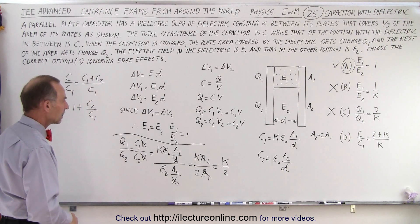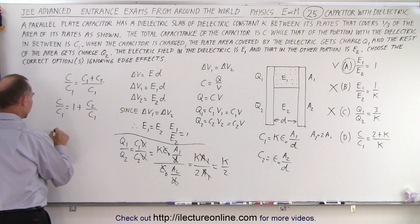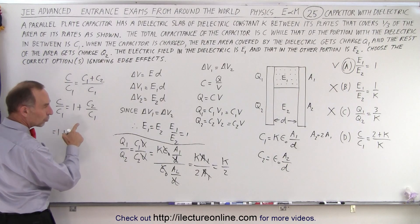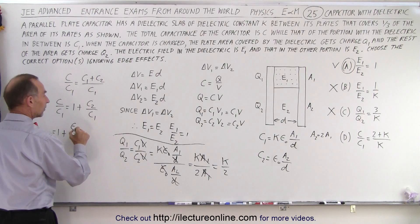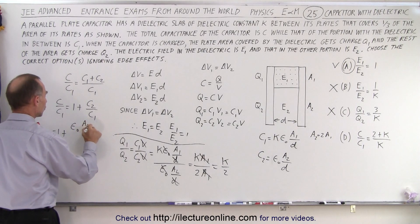Now, C2 over C1, so that is equal to 1 plus C2 is epsilon naught times A2 over D.